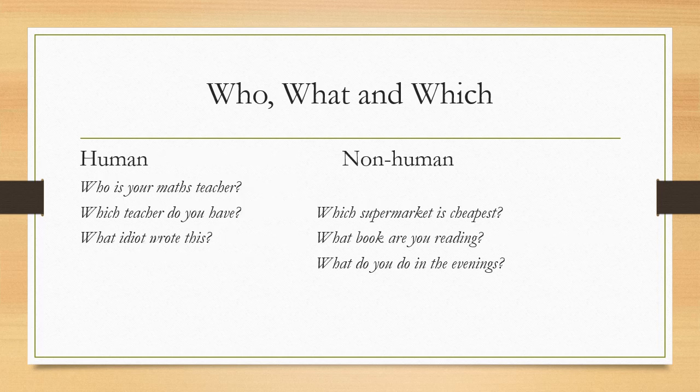Let's look at some sentences. Who is your maths teacher? — it's talking about a human. Which teacher do you have? — here which is referring to a human. Similarly, which can also refer to non-human things, like which supermarket is the cheapest. When we use what: what book are you reading? What do you do in the evenings? We use what to refer to non-human things. But sometimes when a noun follows what, like what idiot wrote this, it can be used to talk about humans — but not always.